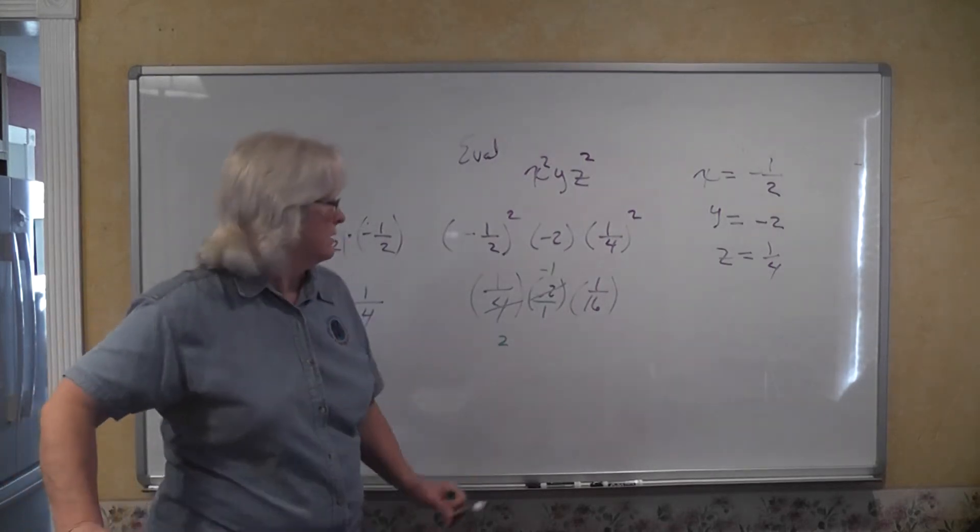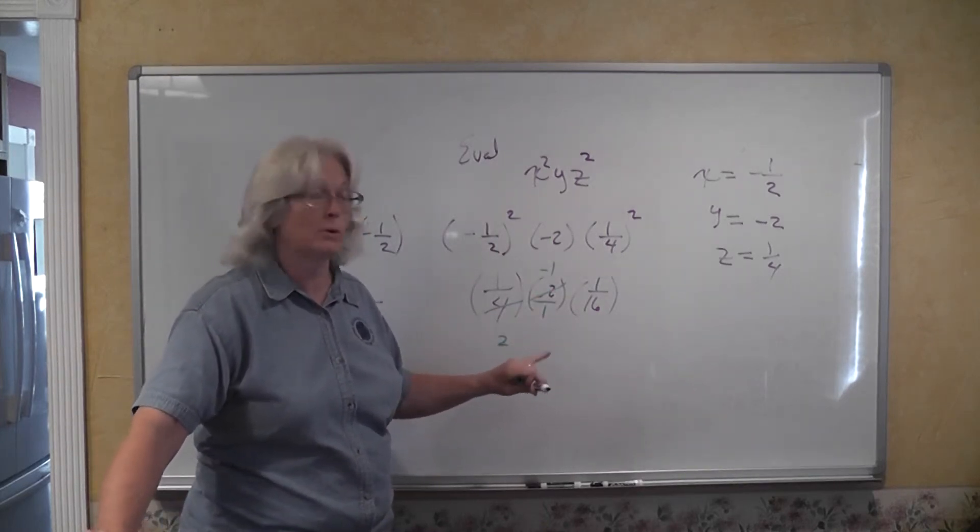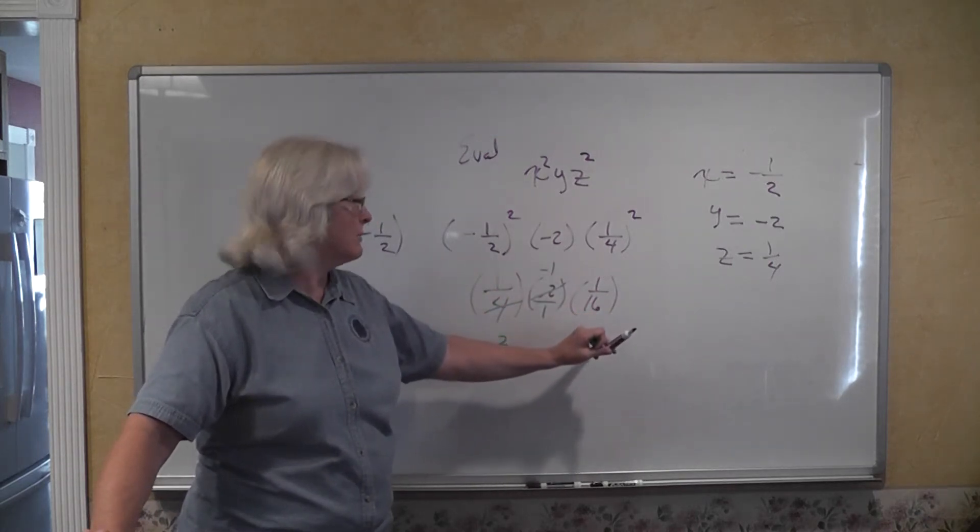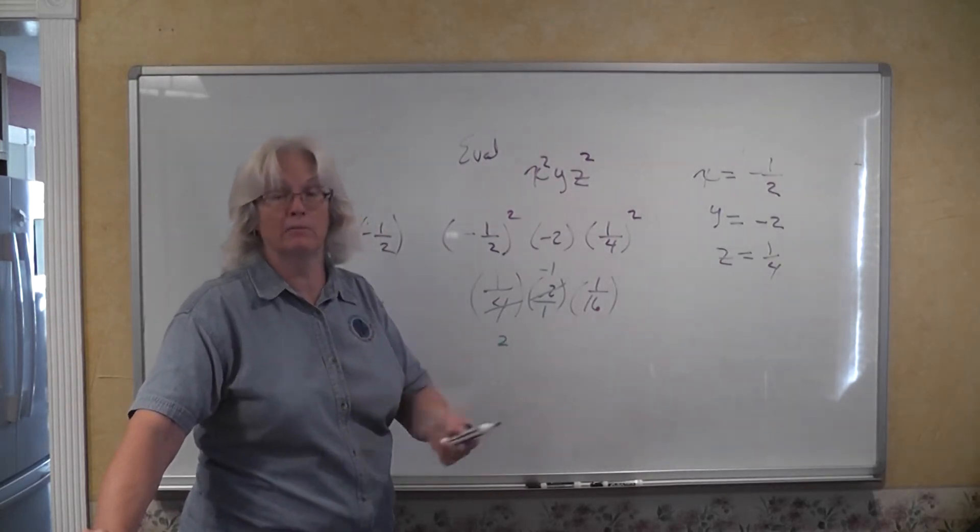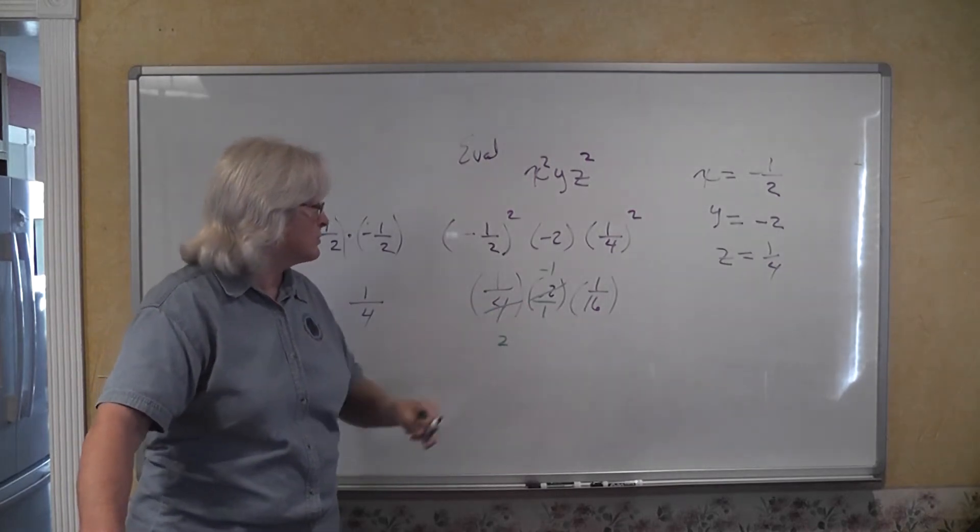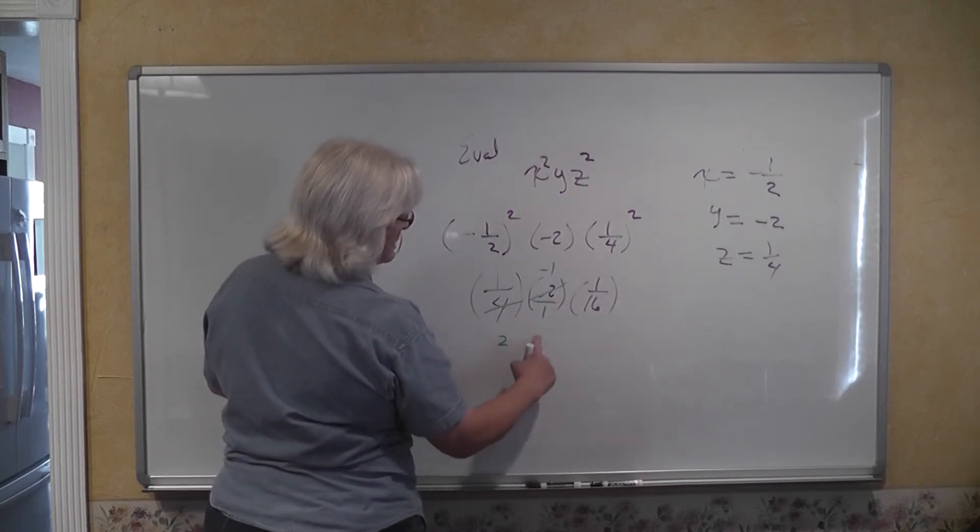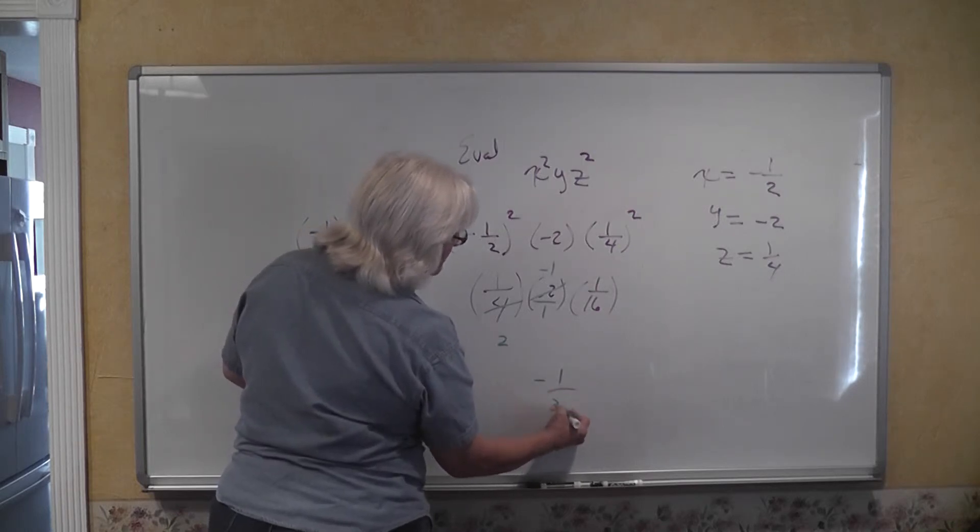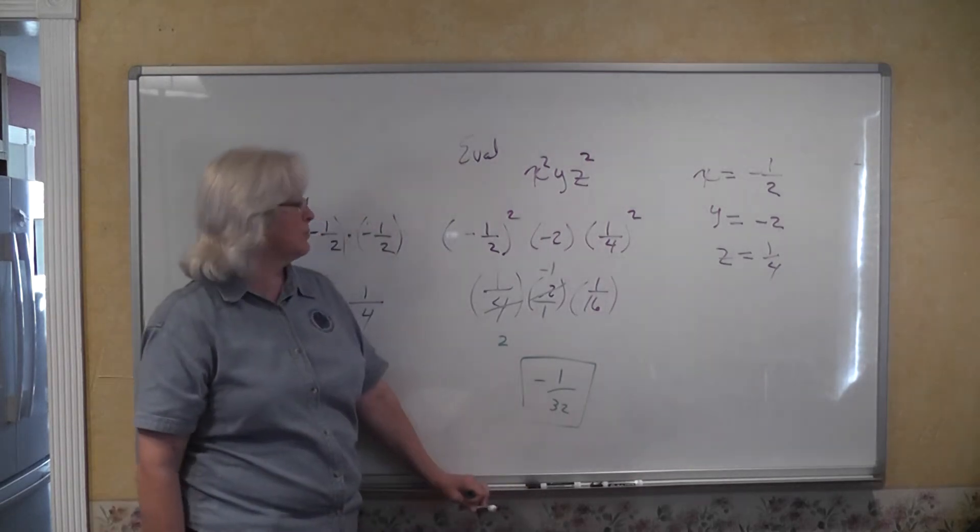I happen to think my way of doing it is a little bit more straightforward than the book. The book just multiplies numerators, multiplies denominators together before they cancel. I now have a negative 1 in the numerator and I have 2 times 1 times 16. So that gives me a value of negative 1 32nd. Everybody see that? It should be pretty obvious to you.